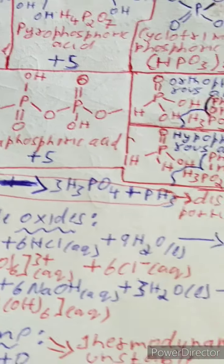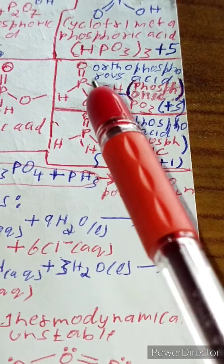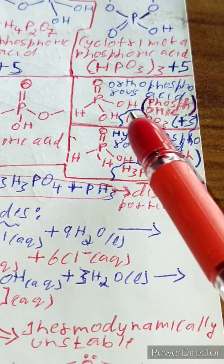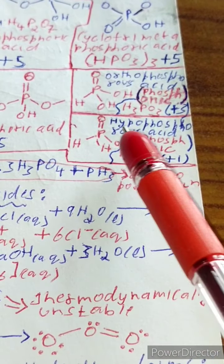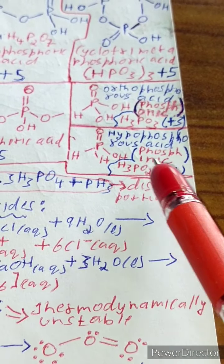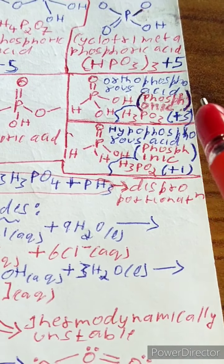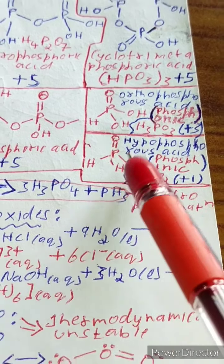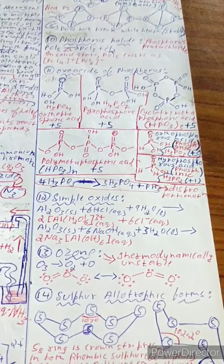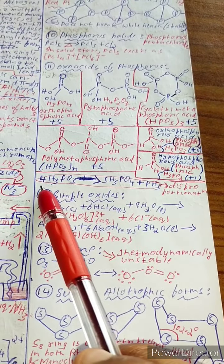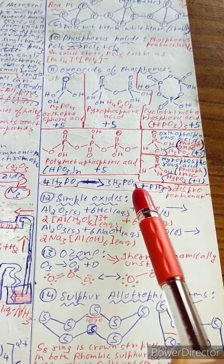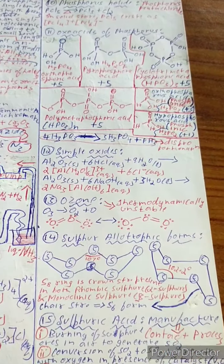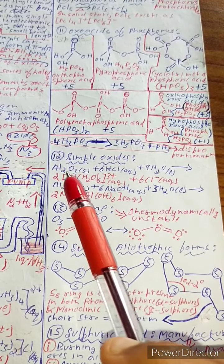Orthophosphorous acid (phosphonic acid) H₃PO₃, oxidation state +3. Hypophosphorous acid (phosphinic acid) H₃PO₂, oxidation state +1. Disproportionation reaction: 4H₃PO₃ → 3H₃PO₄ + PH₃.